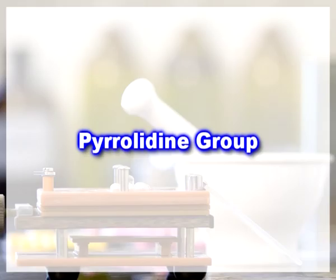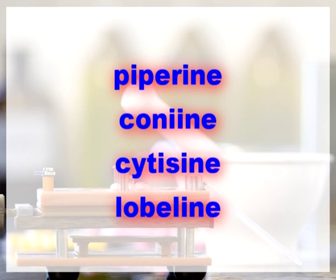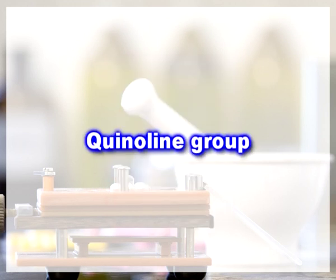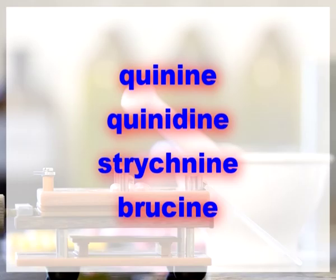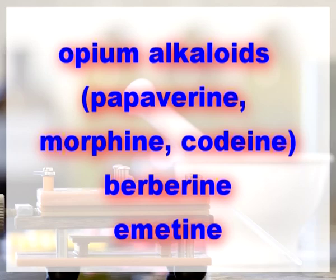Examples of alkaloids on the basis of chemical origin: First, the pyrrolidine group — examples are hygrine, cuscohygrine, nicotine. Second, the piperidine group — examples are piperine, coniine, cysteine, lobeline. Quinoline group — examples are quinine, quinidine, strychnine, brucine. Isoquinoline group — major examples are opium alkaloids: papaverine, morphine and codeine, berberine, emetine.